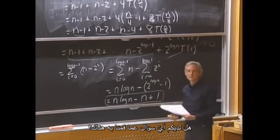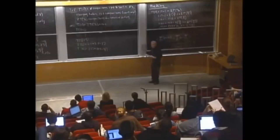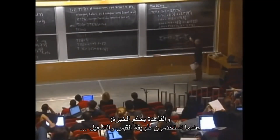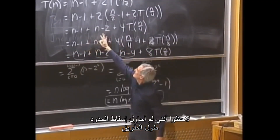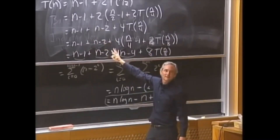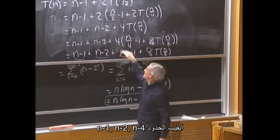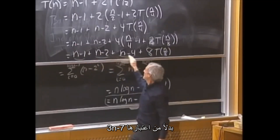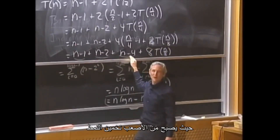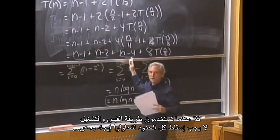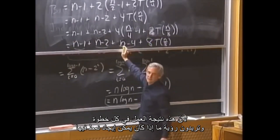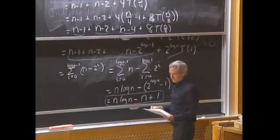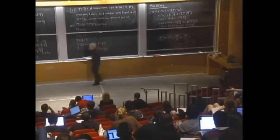One rule of thumb when doing plug and chug: don't collapse terms along the way. I left it as (n−1) + (n−2) + (n−4) rather than combining into one expression — it makes it easier to see the pattern. You want to see the amount of work done at each step, so resist collapsing everything down prematurely.